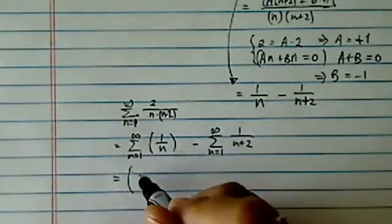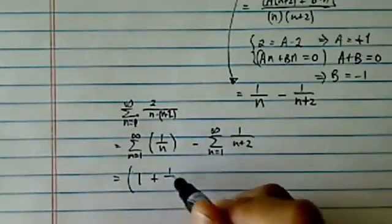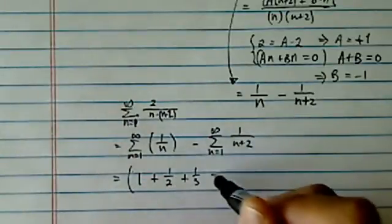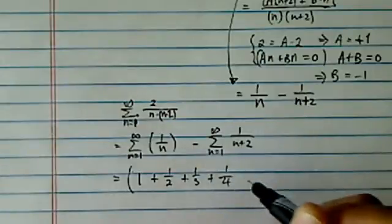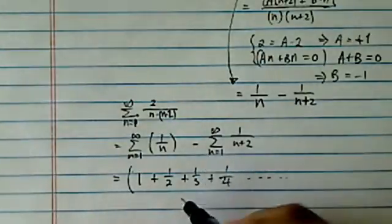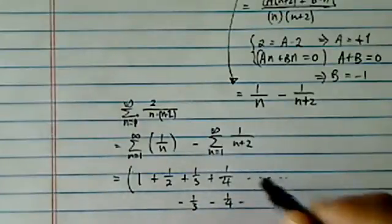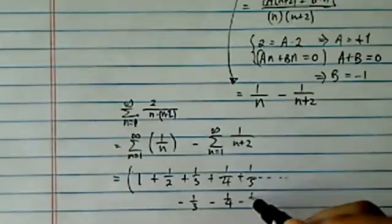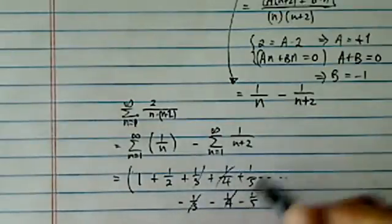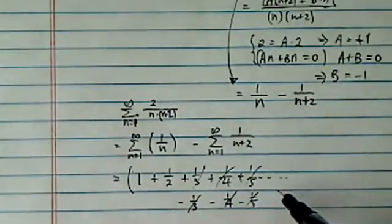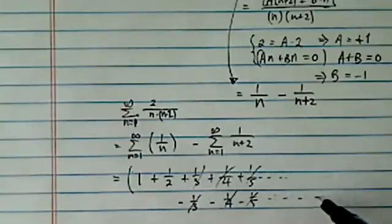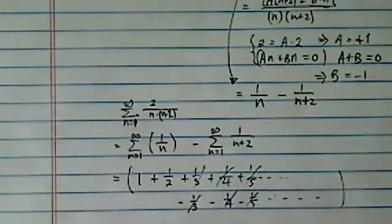Let's write the first couple terms. So we have 1 plus 1 over 2 plus 1 over 3 plus 1 over 4, so on and so forth, and then minus, the first term is 1 third, then minus 1 over 4, minus 1 over 5. Now watch all those terms kind of cancel each other out. Okay, so this is the telescoping part.